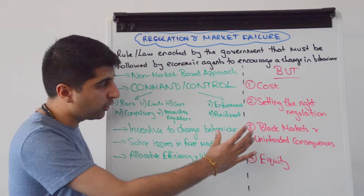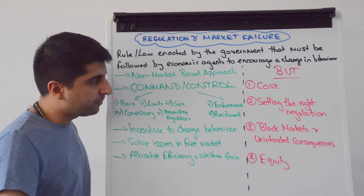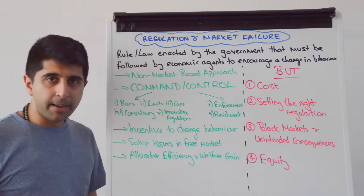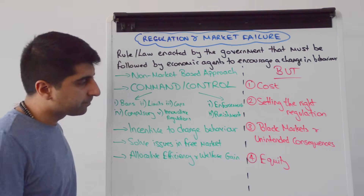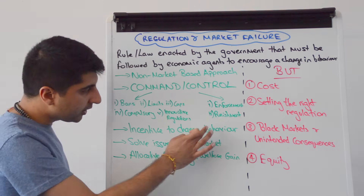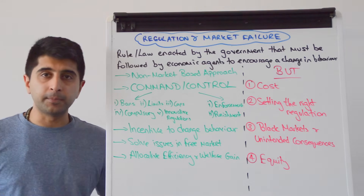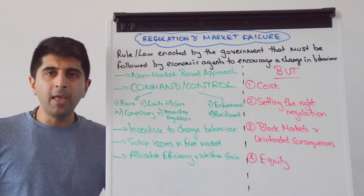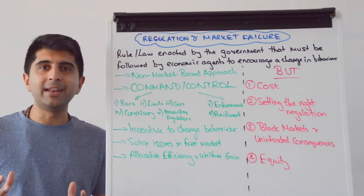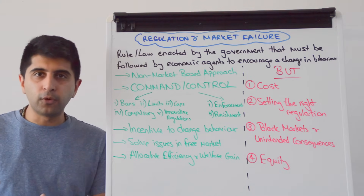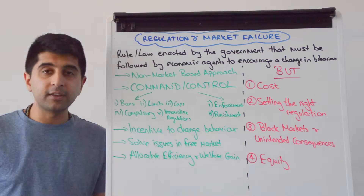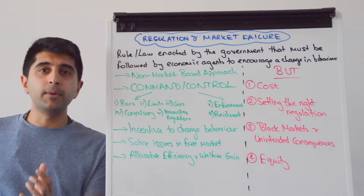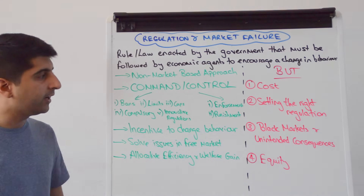Even if the regulation isn't set too strict, there is a strong likelihood of consumers finding alternative supplies and businesses finding regulations too much of an impact on their profitability — leading them to leave the country, produce less, or shut down. We can also look at the impact on equity, especially with pollution caps and how unfair they might be on some firms. It might be very difficult for firms with historically fossil-fuel-dependent production to reduce pollution, compared to newer firms with more environmentally friendly methods. Blanket pollution caps imposed equally could be very unfair. In that case, a tradable pollution permit scheme might be more appropriate, giving firms a choice and greater equity in how the policy works.